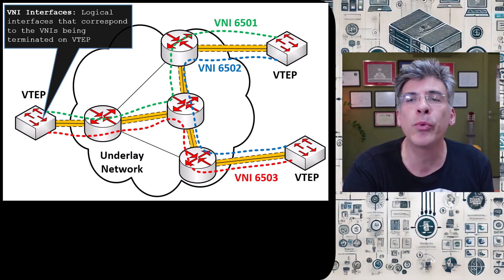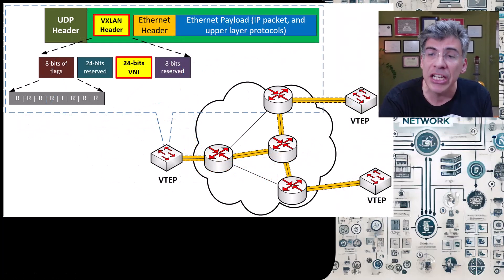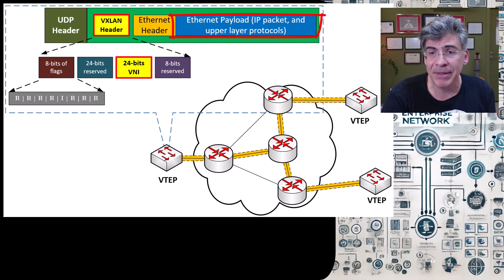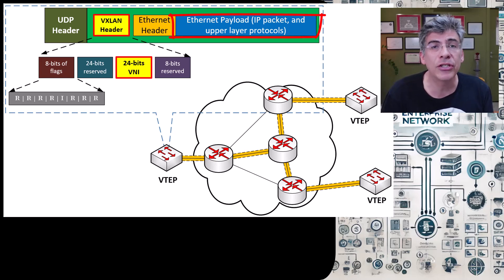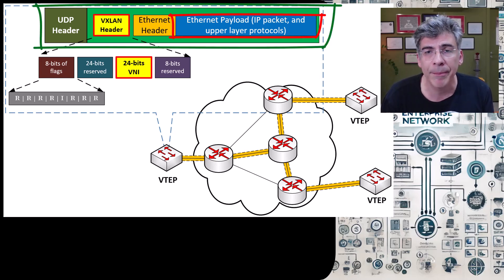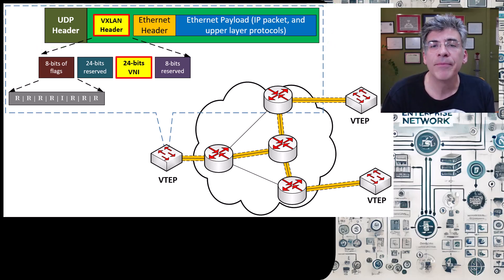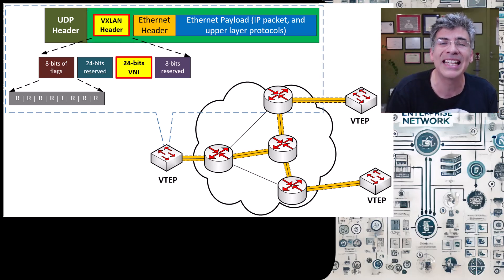Here is an illustration of the encapsulation that takes place using VXLAN. We have the data, which is encapsulated within an IP packet, which is then encapsulated into an Ethernet frame. This frame is a layer 2 entity, and it is then encapsulated into a UDP datagram. But before adding the UDP header, we first add a VXLAN header. We'll be taking a more detailed look at this tunneling process in the next video.